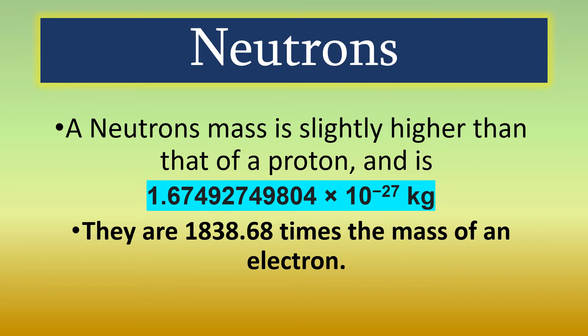A neutron's mass is slightly higher than that of a proton and is approximately 1.6749 × 10^-27 kilograms. Neutrons are 1838.68 times the mass of an electron.